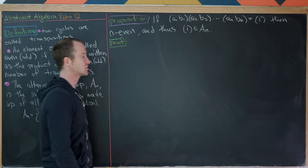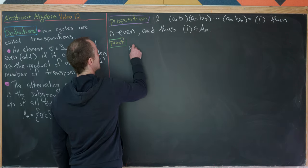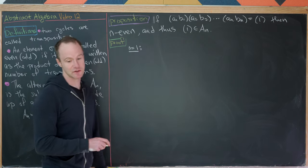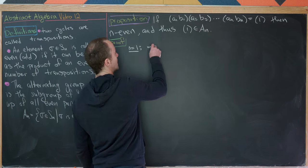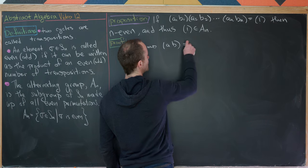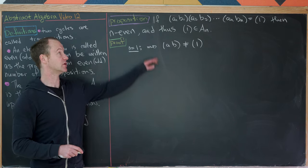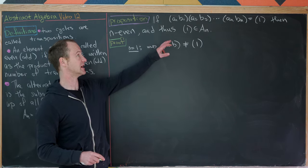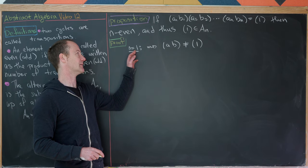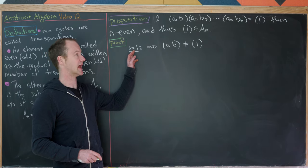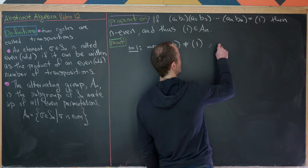We'll prove this by induction on the number of cycles. For the base case N=1, a single transposition (A,B) is most definitely not equal to the identity, because it sends A to B and so does not fix A. For N=2, if (A,B)(C,D) equals the identity, then the transposition (A,B) must equal the transposition (C,D), since transpositions are their own inverses.